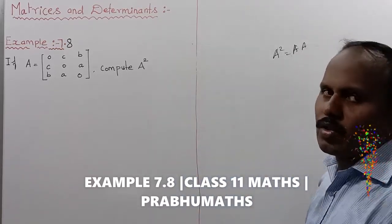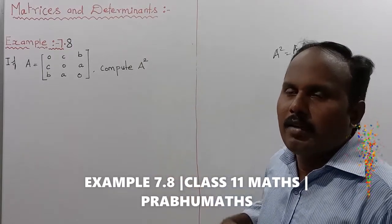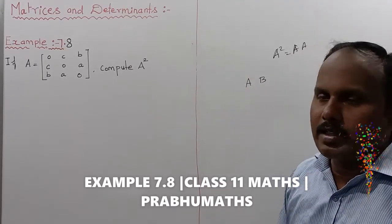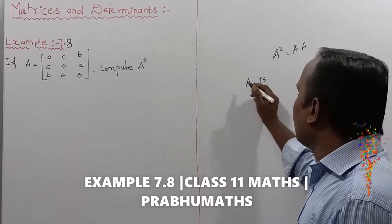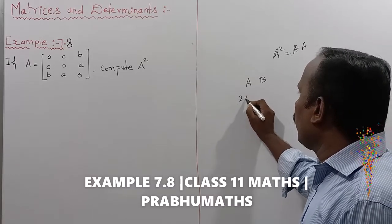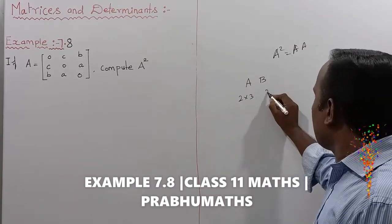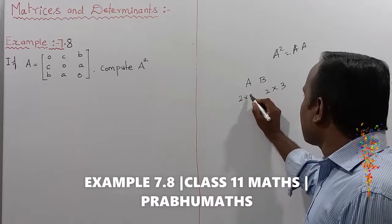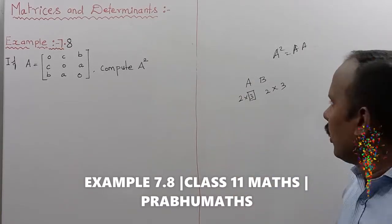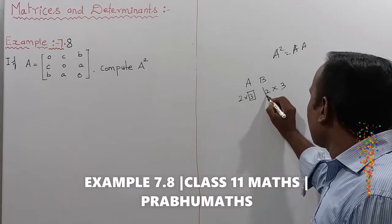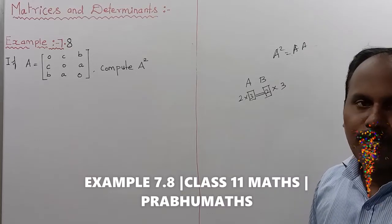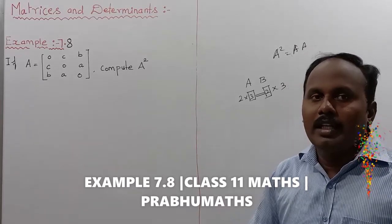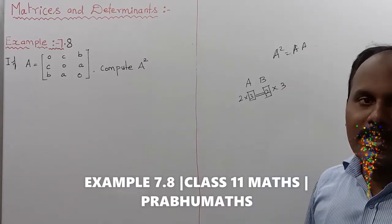This is called matrix multiplication. The condition for matrix multiplication: the first matrix column and the second matrix row must compulsory be the same. Listen carefully — the first matrix column and second matrix row should be the same. Only when that condition is met, matrix multiplication is possible.